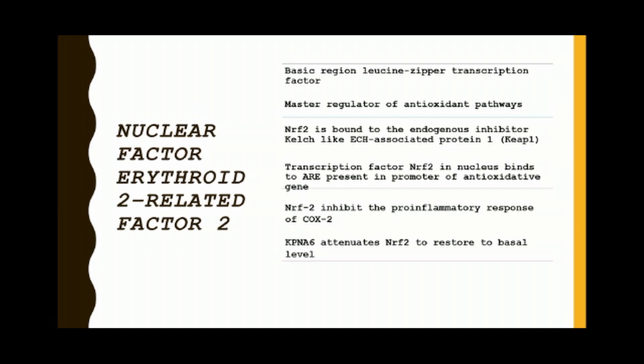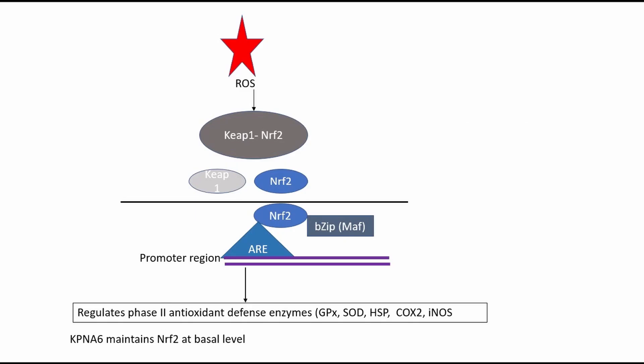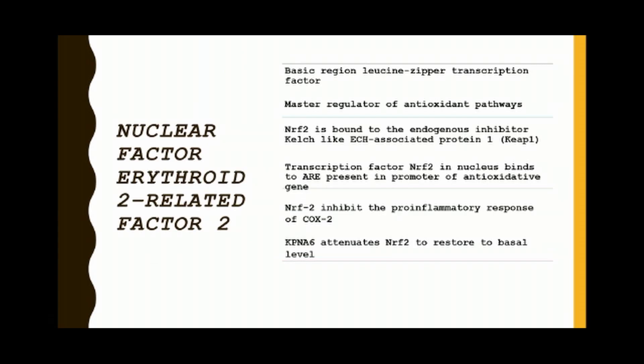NRF2-ARE binding regulates the expression of genes involved in cellular antioxidant and anti-inflammatory defense, such as phase 2 detoxification enzymes, glutathione, superoxide dismutase, glutamate, glucose-6-phosphate dehydrogenase, heat shock proteins, ferritin, and pro- and anti-inflammatory enzymes such as cyclooxygenase 2 (COX2), inducible nitric oxide synthase (iNOS), and heme oxygenase 1. It also regulates mitochondrial biogenesis.